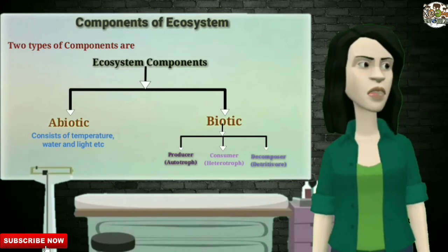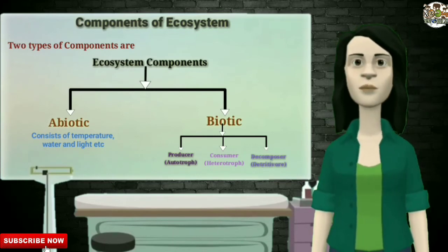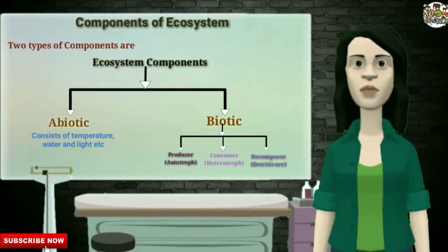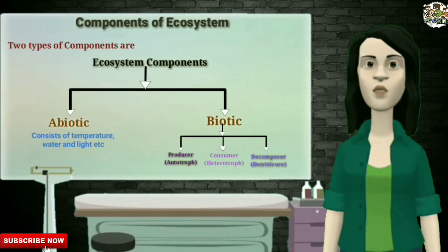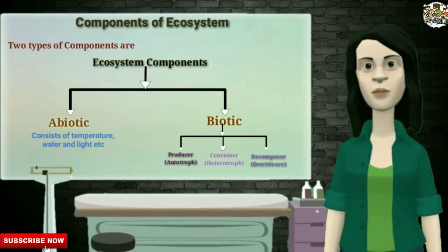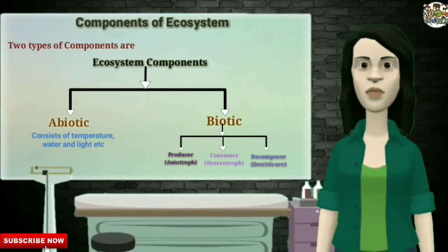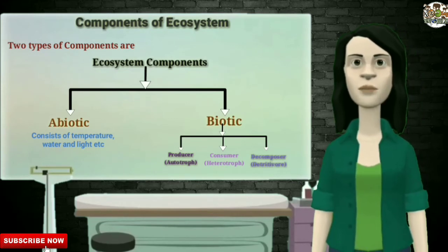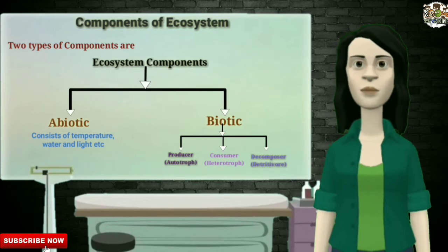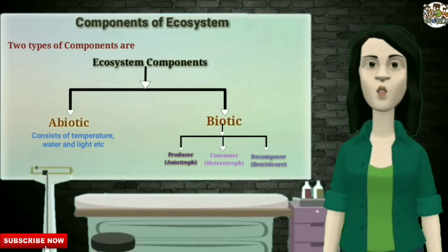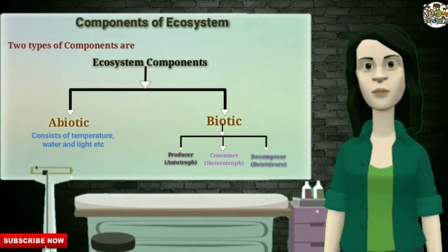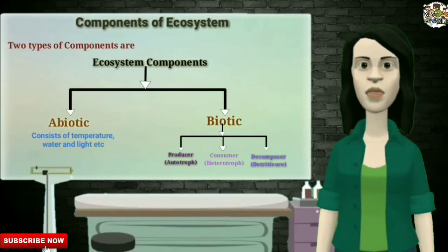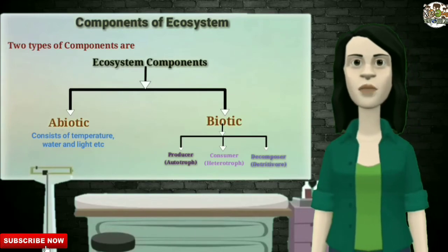Consumers, that is heterotrophs — for example, animals — depend upon producers for food. Decomposers, that is detritivores — for example, fungi and bacteria — which break down chemicals from producers and consumers into simpler forms which can be reused.